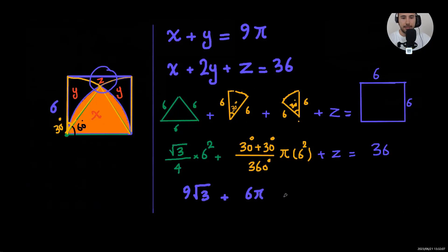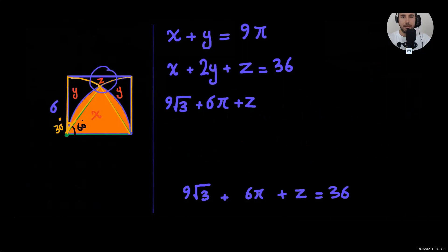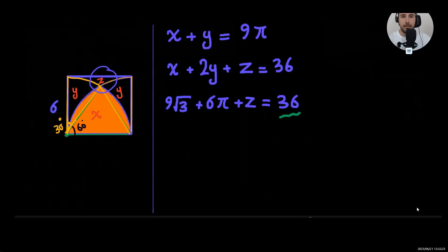6 pi. As I said, 6 pi plus z equals 36. Now let's compare these two equations together. 36 and 36 equal, z and z equal. That means x plus 2y will be this one.